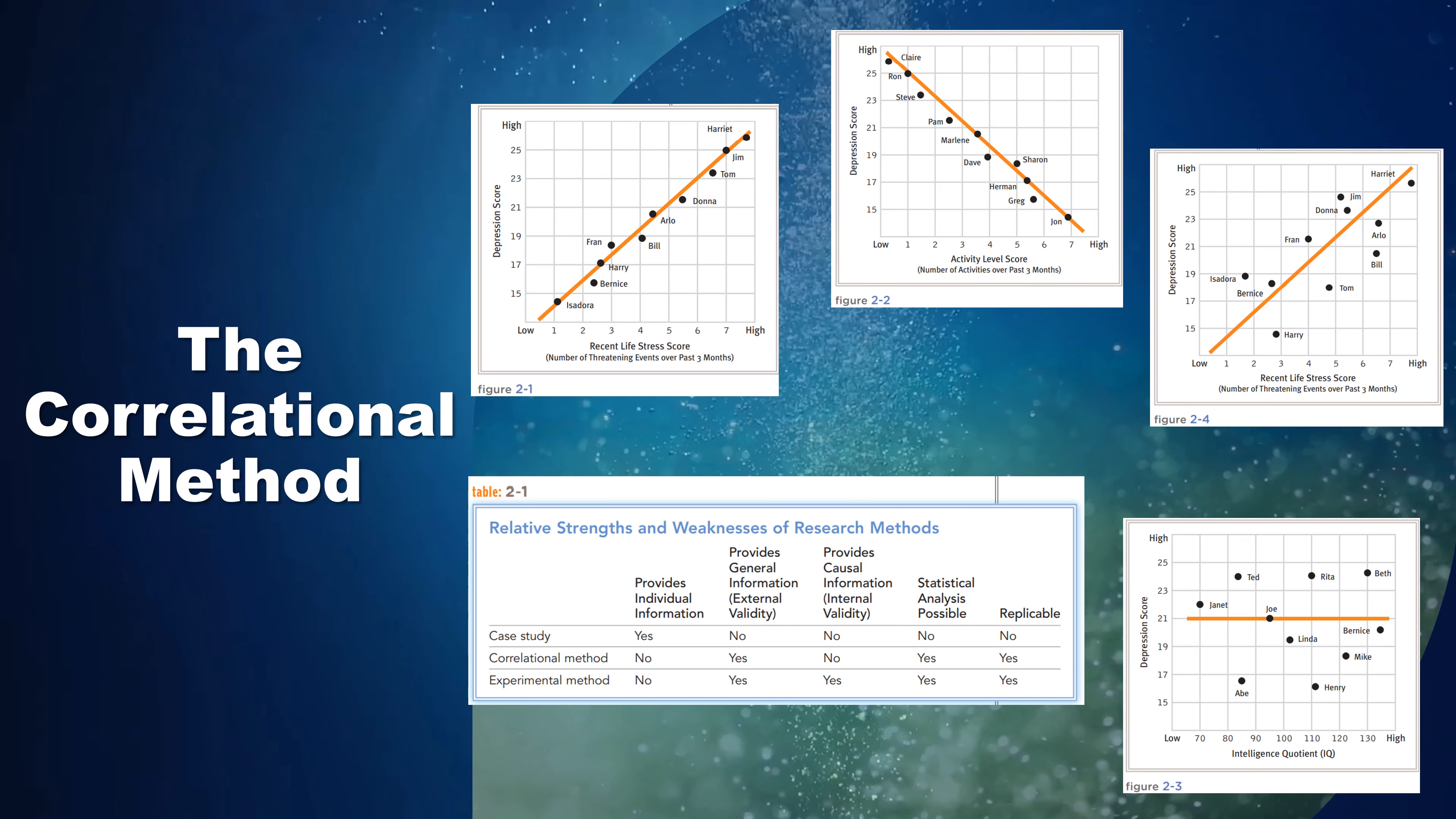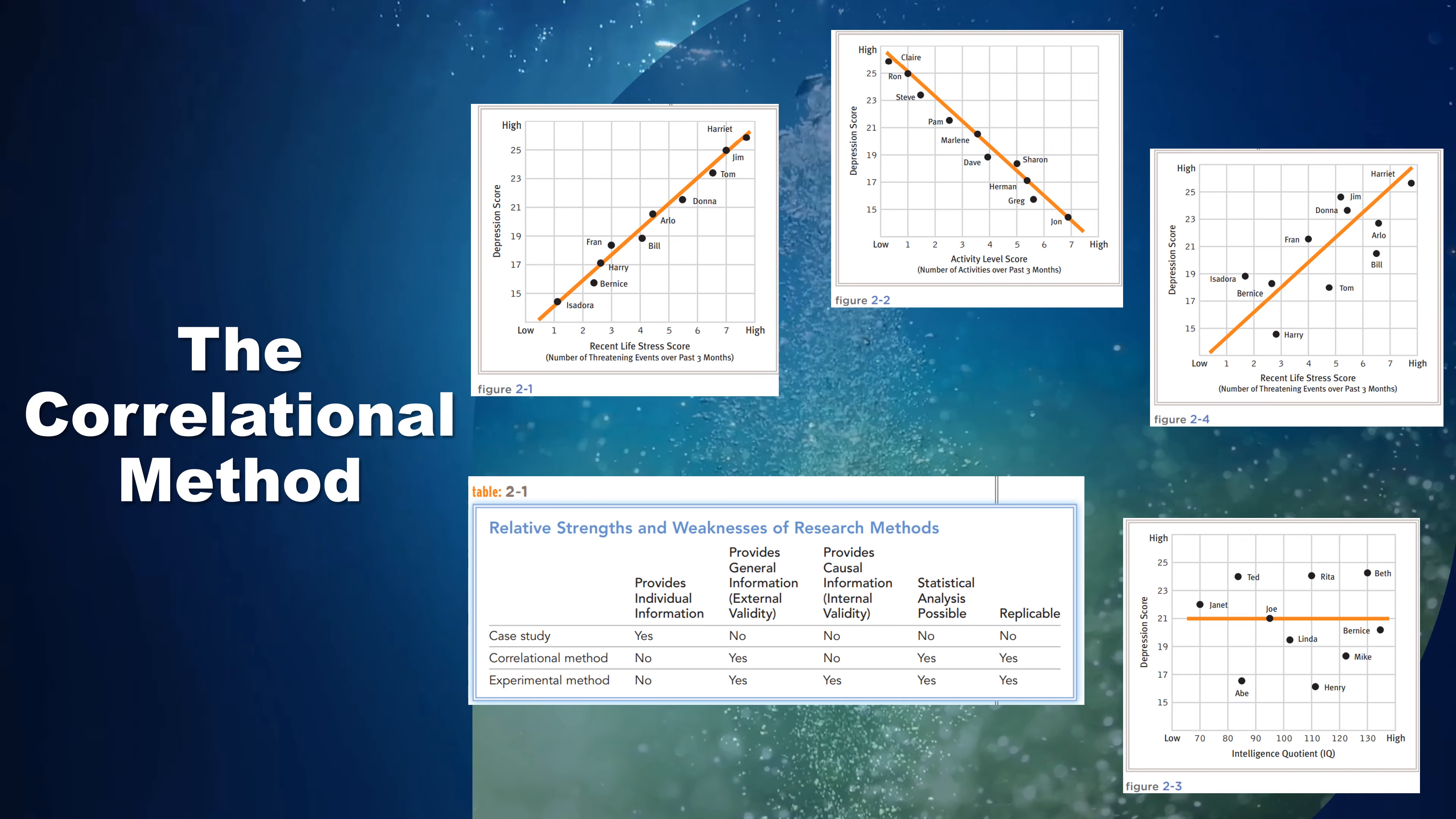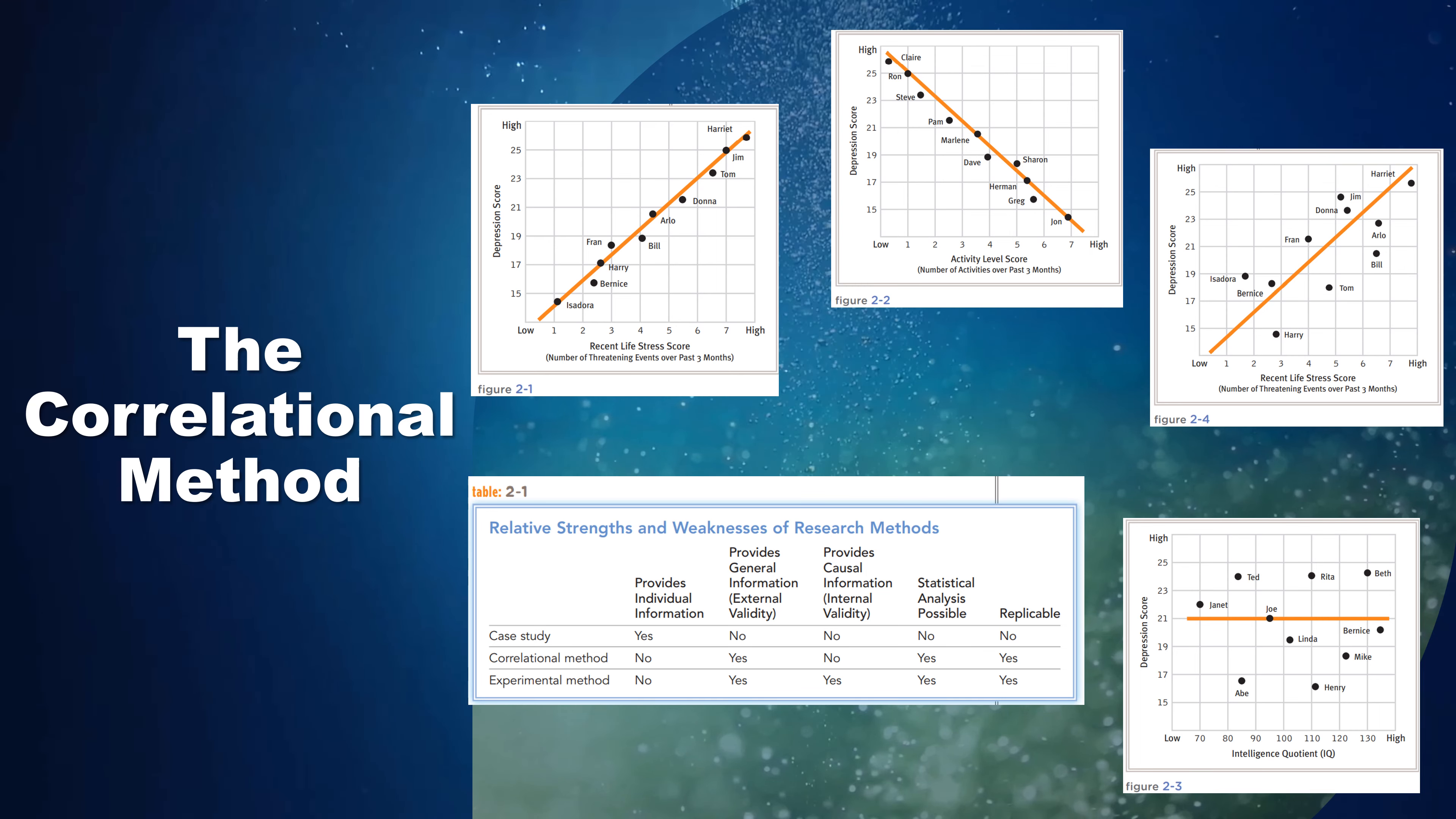Many researchers also refer to epidemiological studies as descriptive studies, because the goal of such investigations is largely to describe the incidence or prevalence of a disorder without trying to predict or explain when or why it occurs.